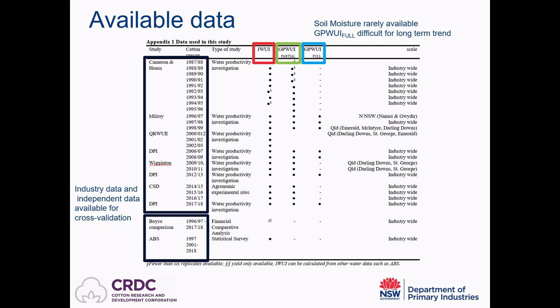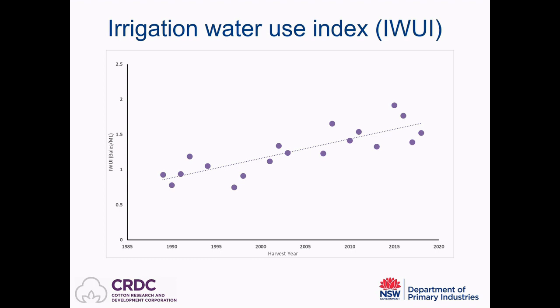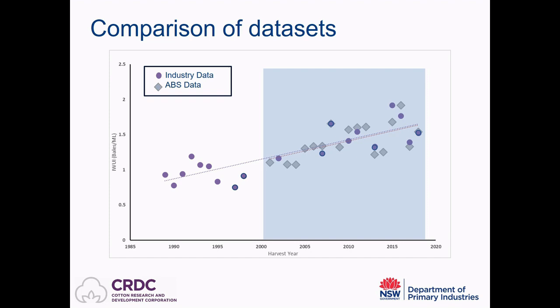When we look at irrigation water use and how productive it is, going back to the late 1980s there has been a very clear, strong, steady, and statistically significant improvement in water productivity over time. Water productivity in 2018 was significantly higher than five years ago. When we compared the industry data for the irrigation water use index with the ABS data as an independent cross-validation — the industry data shown as purple circles and the ABS data as gray diamonds — we see very close agreement between the two datasets, and most interestingly, the same trend of improved water productivity. That's a really nice validation of the dataset.